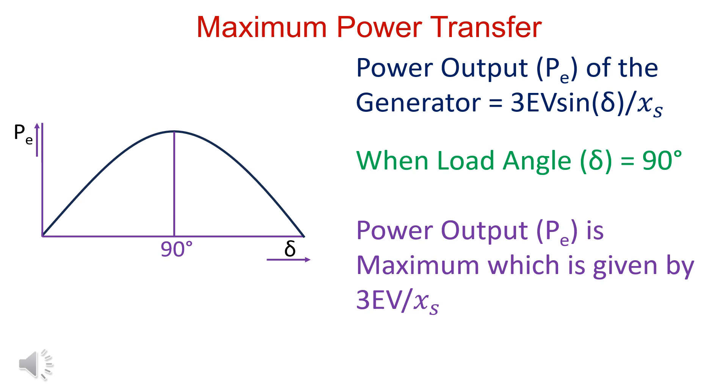In a power angle curve, at what angle does maximum power transfer take place? Maximum power transfer takes place at load angle 90 degrees.